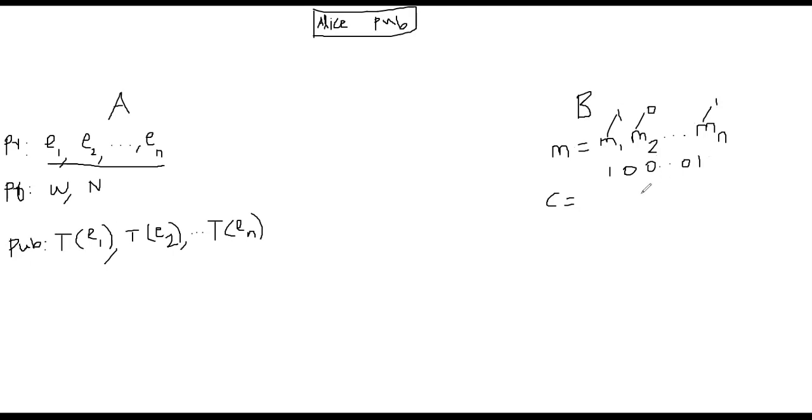So how will he do that? All he will do is he will take this one, which is the first bit from the left position, he will multiply it with T of E1. That means he will have the first bit T of E1, which is public. T of E1 is known to everybody. And he will add it with T of En, because that's the other bit that is turned on. So he's going to send this ciphertext C to Alice.